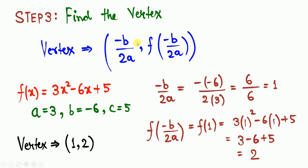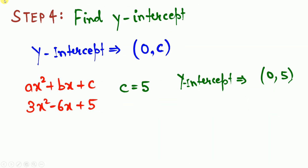Step 3: find the vertex using (−b/2a, f(−b/2a)). Here −b/2a = −(−6)/(2×3) = 6/6 = 1. Then f(1) = 3(1)² − 6(1) + 5 = 2. So the vertex is at (1, 2).